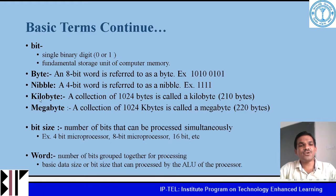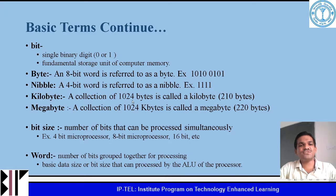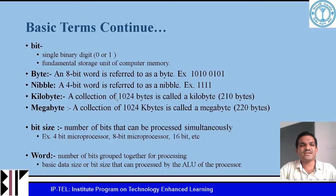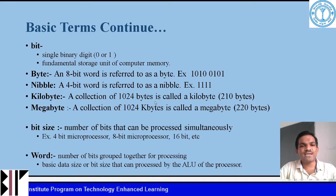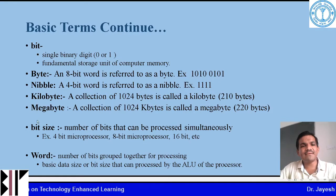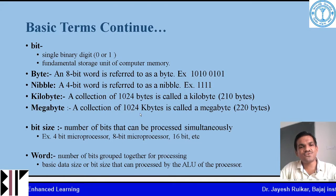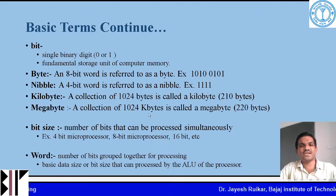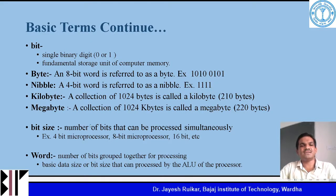Next is kilobyte. A collection of 1024 bytes is called a kilobyte. Megabyte is nothing but a collection of 1024 kilobytes, and that is called a megabyte.